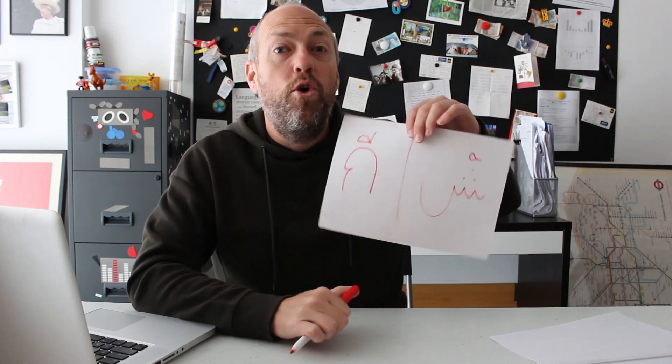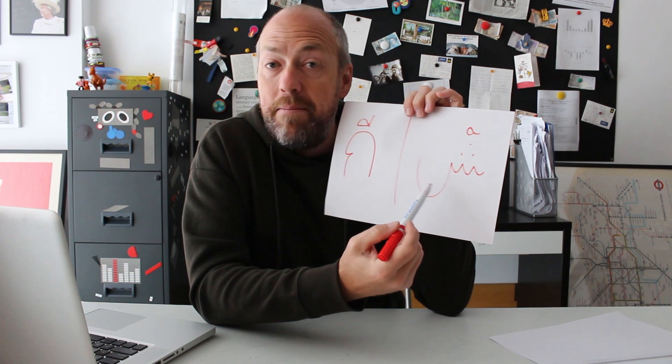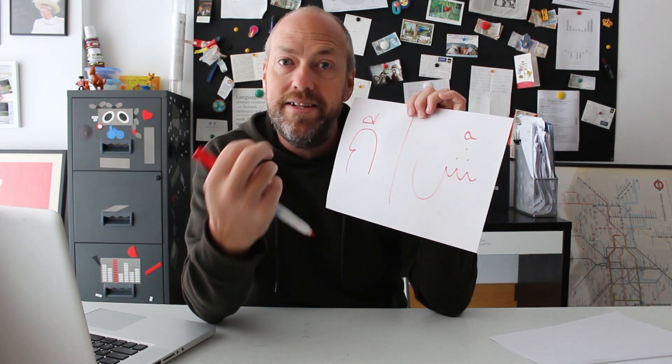Now, why am I telling you all this? Why am I telling you about abugidas and abjads and consonants with automatic vowels? Because I'm about to propose a theory — a very controversial theory that I invented myself — and that is that in reality, English is an abjad. And by realizing that English is actually an abjad, that helps you to really understand English pronunciation.